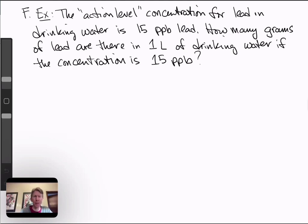Okay, so the action level concentration for lead in drinking water is 15 parts per billion lead. How many grams of lead are there in one liter of drinking water if the concentration is 15 parts per billion?